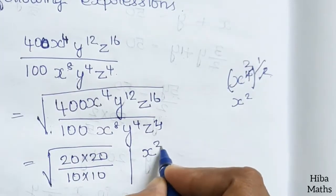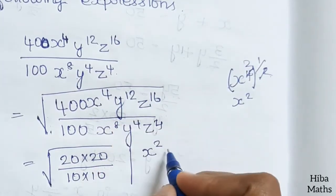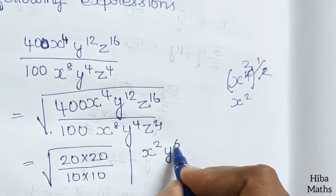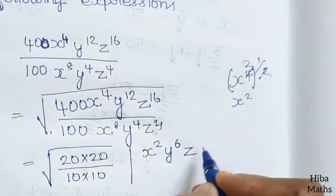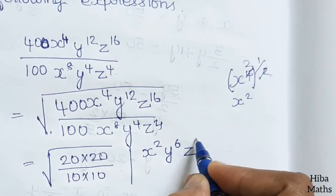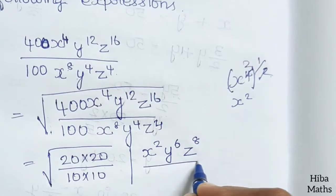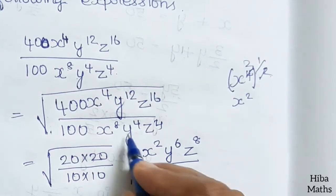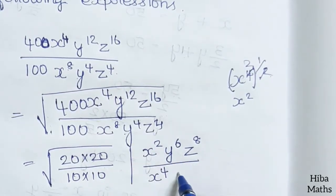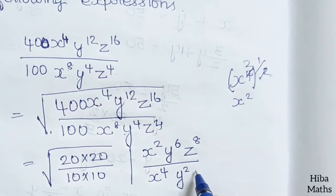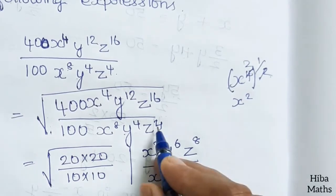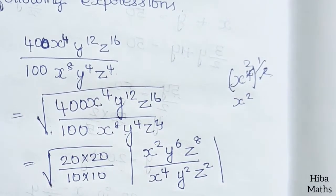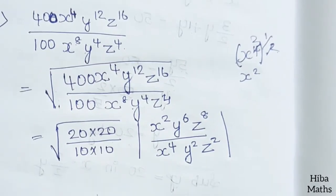x power 4 becomes x power 2. y power 12: 12 divided by 2 is 6. z power 16 divided by 2 is 8. In the denominator, x power 8 becomes x power 4, y power 4 becomes y power 2, and z power 4 becomes z power 2.